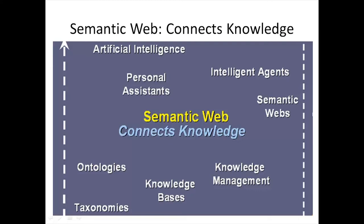There are a number of challenges to the further development and implementation of a semantic web, outlined in more detail in the Web 3.0 Wikipedia article. These include: vastness, vagueness, uncertainty, inconsistency, and deceit — all issues that need to be addressed in order for Web 3.0 to become a reality.